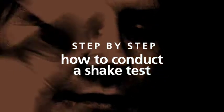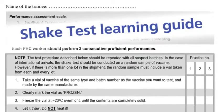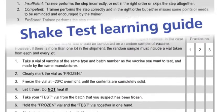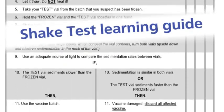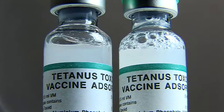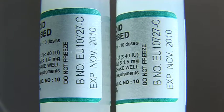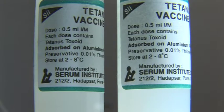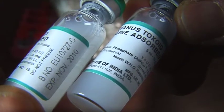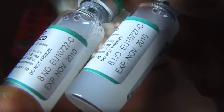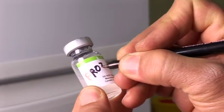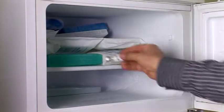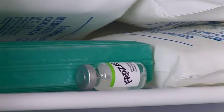Step by step — how to conduct a shake test. The WHO has developed a standard shake test learning guide that can also be used as a checklist; the steps described in this guide must be followed thoroughly. The first step is to prepare a frozen control vial. Take a vial of vaccine of the same type and batch number as the vaccine you want to test — it should also be made by the same manufacturer. If more than one batch is in question, a frozen control sample should be prepared separately for each batch and each batch should be tested with its own control sample. This vial must be clearly marked as frozen.